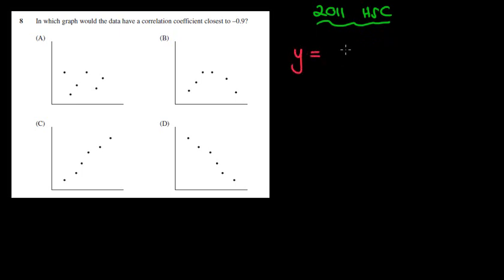In which graph would the data have a correlation coefficient closest to negative 0.9? When we think of the correlation, let's think about y = mx + b. We're going to have a straight line stuff. We want to see if there is a correlation. If there is a correlation, for example, C is a positive correlation because it's going left to right, it's increasing, negative for D.